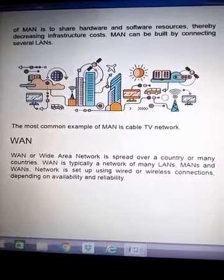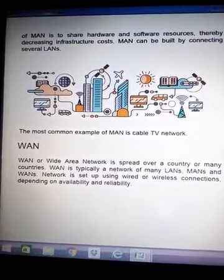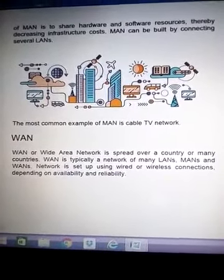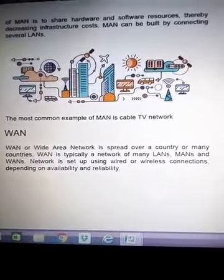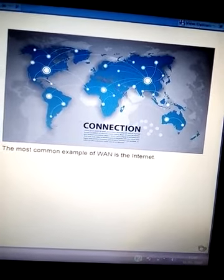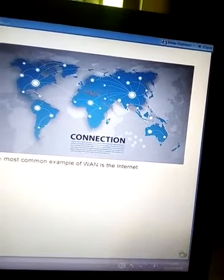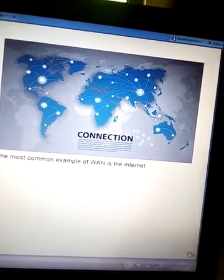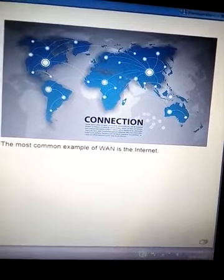WAN stands for Wide Area Network and it spans over a country or many countries, or you can say the world. WAN is typically a network which is a combination of many LANs, MANs, and WANs, set up using wired or wireless connections depending on availability and reliability. A common example of WAN is the internet, which connects all countries, states, and districts, allowing data to be sent from one place to another across long distances.